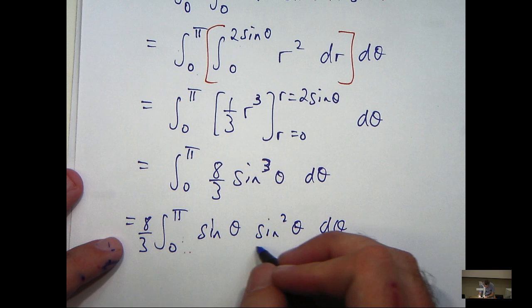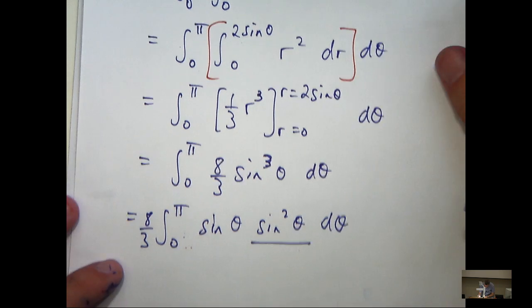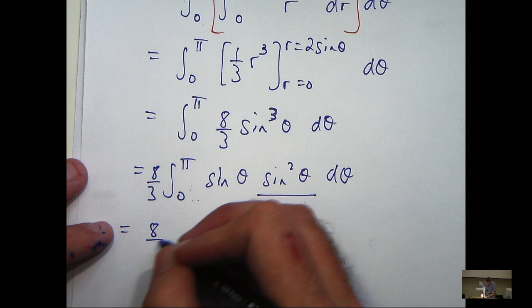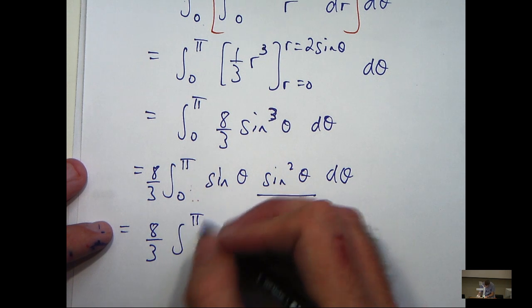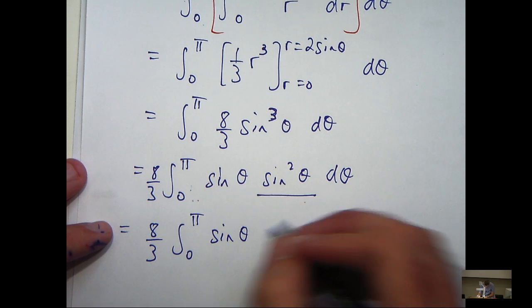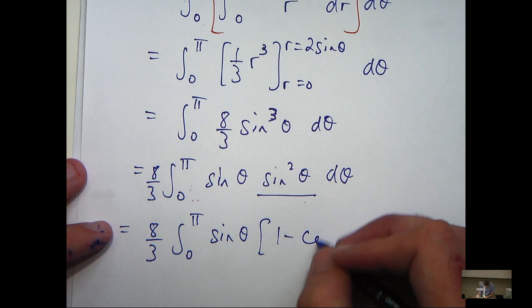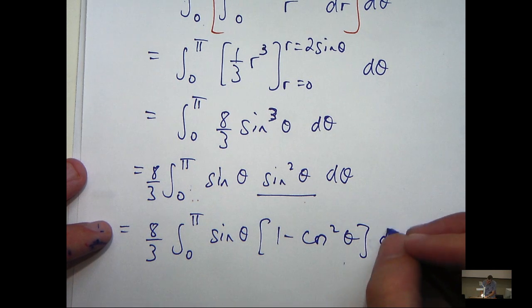So, this sine squared theta will then be replaced with 1 minus cos squared theta. This is all going to aid our integration.